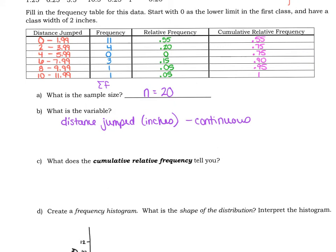What does the cumulative relative frequency tell you? The cumulative relative frequency, so this last column here, is telling us the proportion. In this case, if you answered as percentages then you would say the percentage of frogs that jumped at most that many inches.